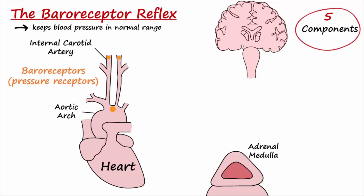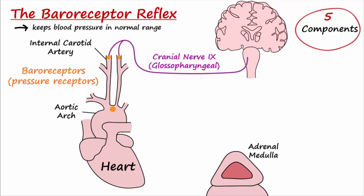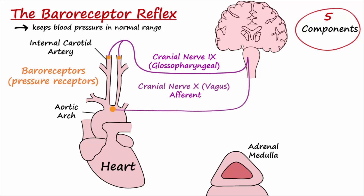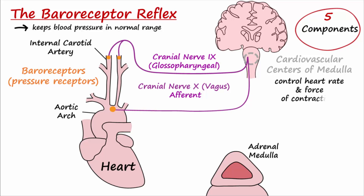The second components are afferent pathways. Action potentials from the carotid sinus baroreceptors are transmitted to the brainstem via cranial nerve 9, and action potentials from the aortic arch receptors are transmitted via cranial nerve 10. The third component is the integrating center, located in the medulla of the brainstem, where there are cardiovascular centers that regulate heart rate and force of contraction, as well as the diameter of systemic vessels, mainly the arterioles.